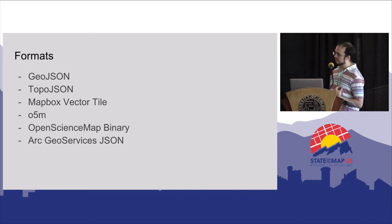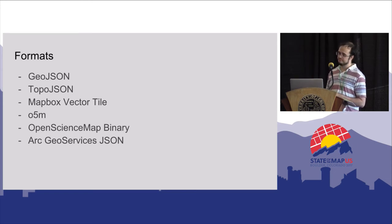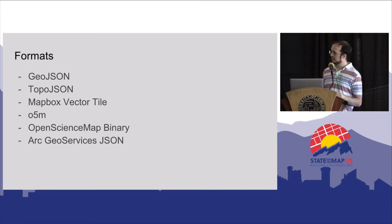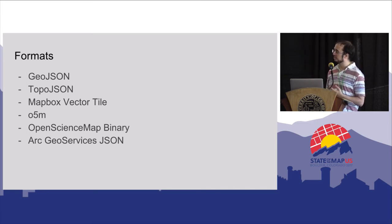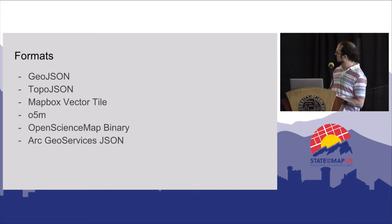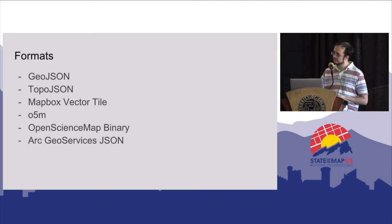There are some other more specialized formats: O5M, which reproduces OSM data exactly; Open Science Map binary, which is an older binary format not used so much; and ArcGIS Services JSON, which you would only use if you're a heavy ESRI shop.